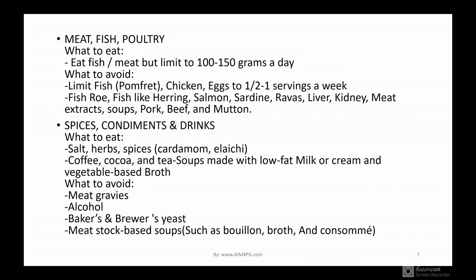For fish, meat, and poultry, you can eat but only in limited quantities — about 100 to 150 grams per day. For eggs, you can take half to one egg per week, not more than that. Try to avoid certain fish such as herring, salmon, sardine, and rawas. Also avoid the liver and kidney of poultry and any animal meat, as these will increase your purine levels.